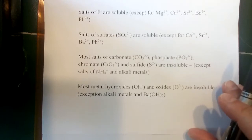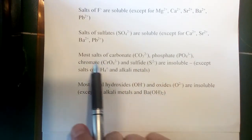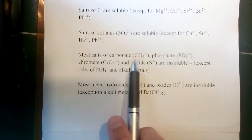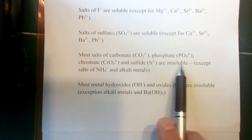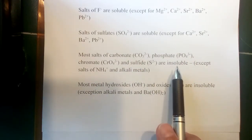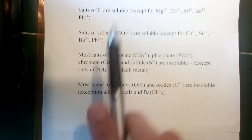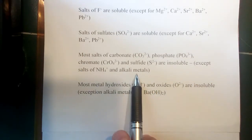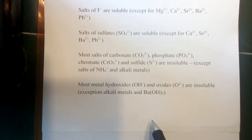For some of these, the exceptions become the important things to keep in mind because they will give us some information about where we're likely to see a solid. Now moving to anions that are generally insoluble: most salts of carbonates, phosphates, chromates, and sulfides are insoluble. They will not dissolve in water, they would list them as a solid. The exceptions really go back to the first rule: salts of ammonium and alkali metals. Alkali metals is a term that's used to describe metals in the first column - that would be your lithium, sodium, potassium, rubidium, cesium.